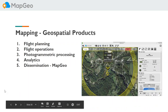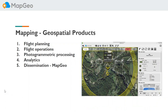For the Spatial Analysis Lab — we're mapping people. Rich's examples illustrate a generally five-step process for mapping: flight planning, flight operations, photogrammetric processing where we take all the images and stitch them together into orthophoto mosaics and terrain products, analytics to turn data into information, and then dissemination — products like MapGeo to get data into the hands of end users.